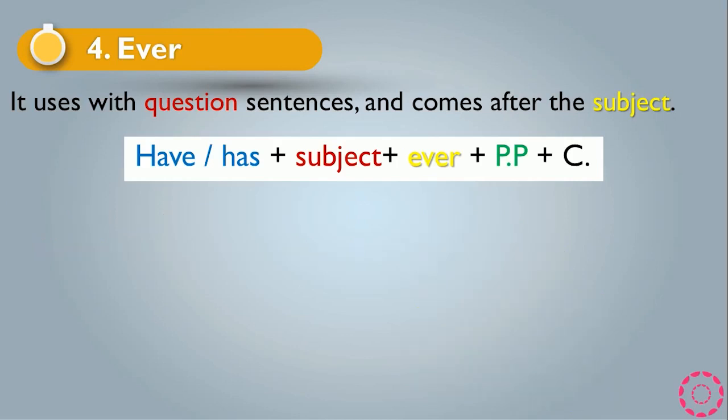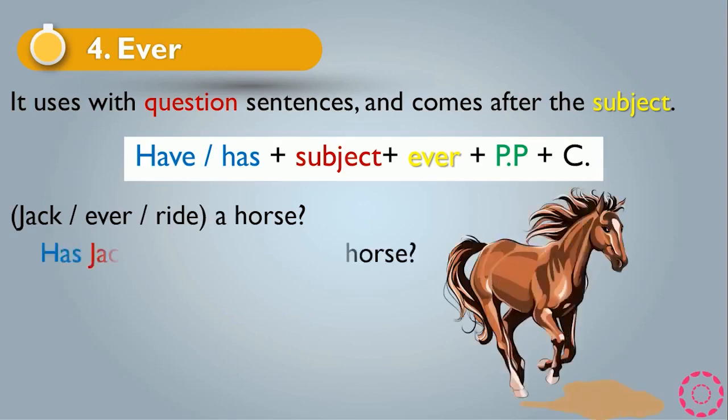Another example: 'Jack ever ride horse' becomes 'Has Jack ever ridden a horse?' We can also use the pronoun he. Ride changes to ridden, which is an irregular past participle. Ever always comes after the subject in the sentence.